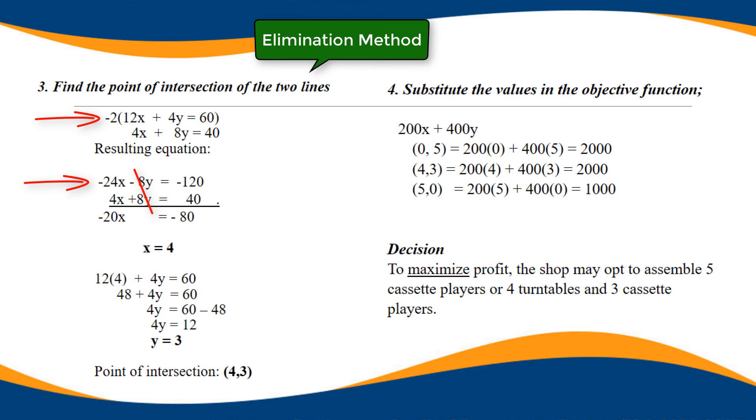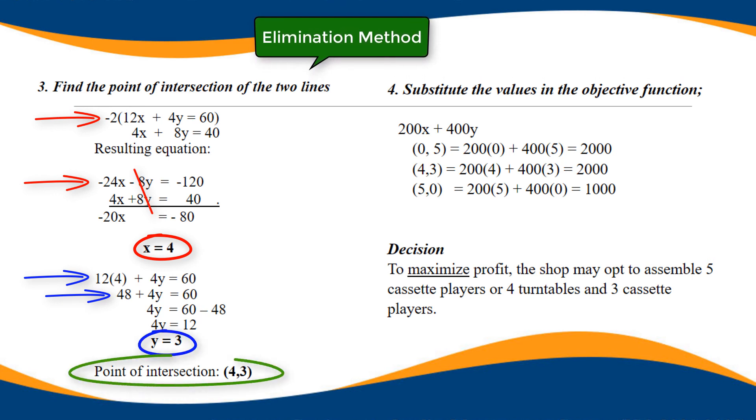Zero for negative 8Y plus 8Y. What remains is negative 20X equals negative 80. Dividing both sides by negative 20, X equals 4. And then to find Y, substitute the value of X into any of the equations. 12 times 4 plus 4Y equals 60, we have 48 plus 4Y equals 60, 4Y equals 12, divided by 4, Y equals 3. Therefore, the point of intersection is 4, 3.